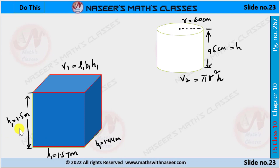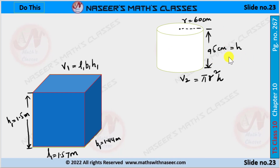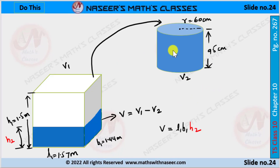The overhead tank is in the form of a cylinder. Its radius is 60 centimeters and its height is 95 centimeters. Volume of cylinder V2 is equal to π × r² × h.